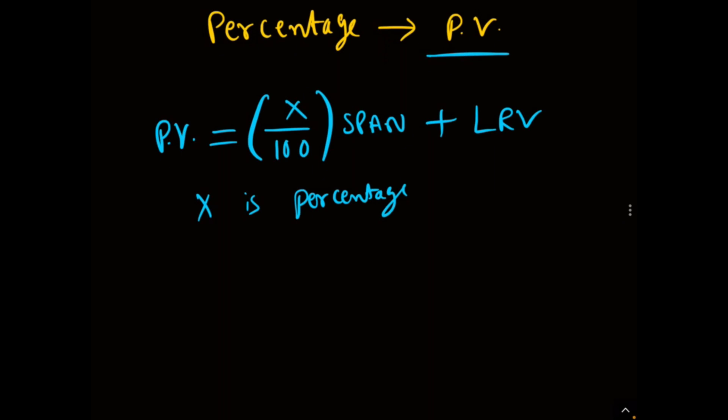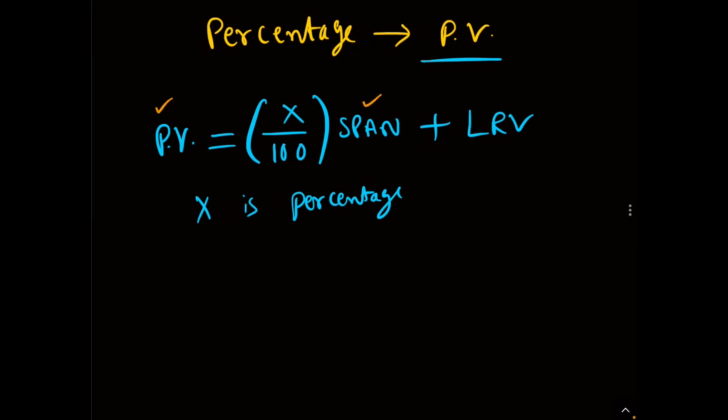For example, if we have a flow transmitter and the output is available in the form of percentage — say 20%, 30%, 60.5% — and you want to calculate the output in terms of process variable, then this formula will be useful. Before going into the example problem, we have to understand PV, span, and LRV (lower range value).